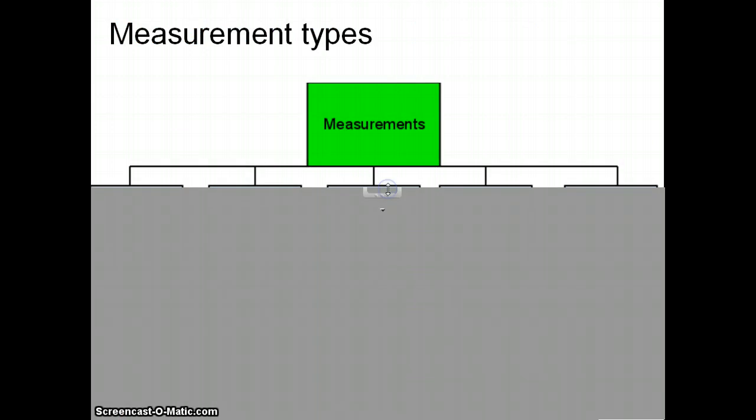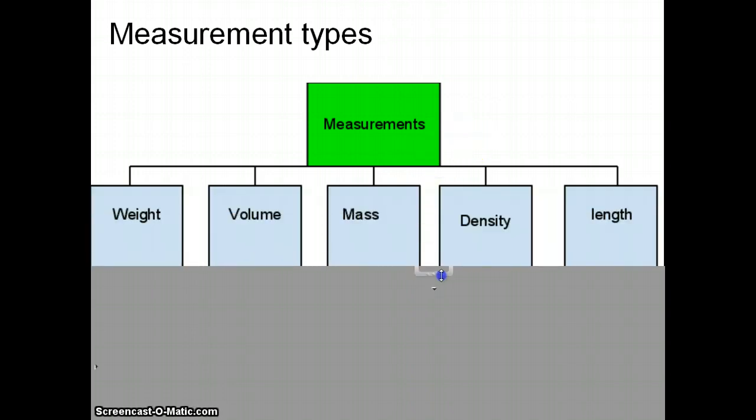Measurements. There are five different measurements that we are going to use in this class and maybe a few others, but these are the main ones. The first one is weight. Next is volume, mass, density, and length. So, what are these?